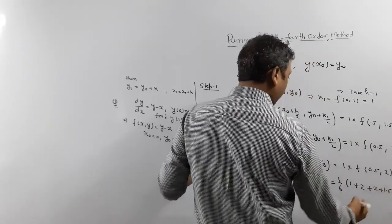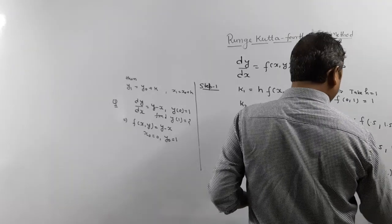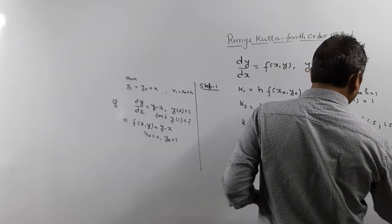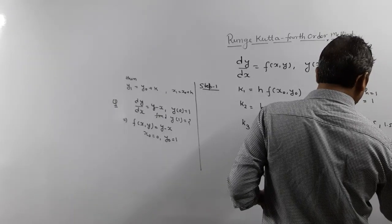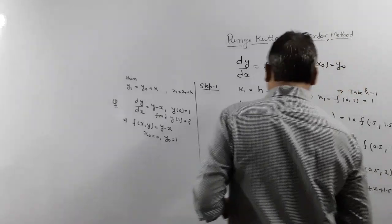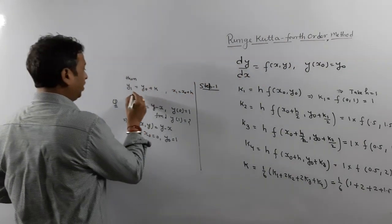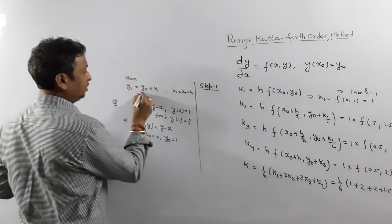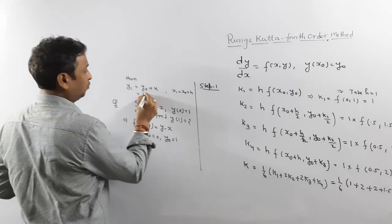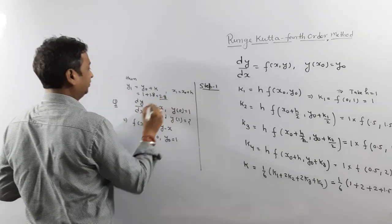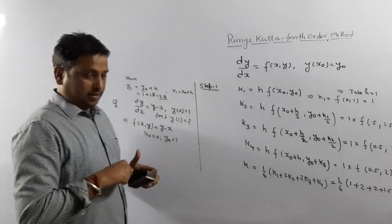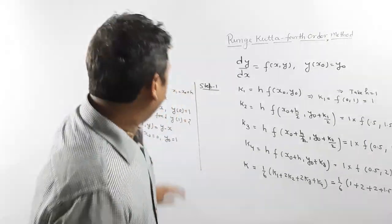What is the answer? 1 plus 2 plus 2 plus 1.5 is 6.5 divided by 6. So what is your y1? y1 is y0, y0 is 1, plus K value is 1.08. So about 2.08. This is the answer.